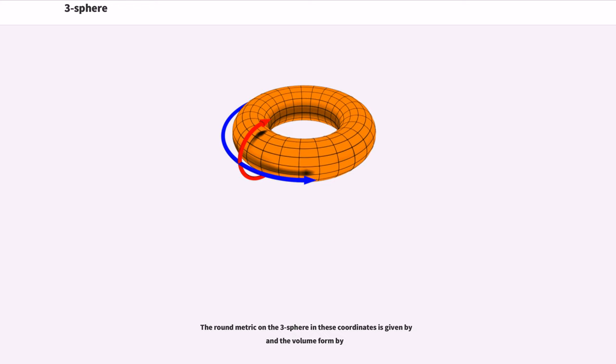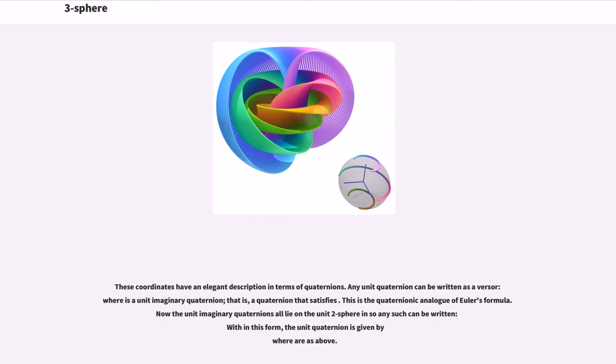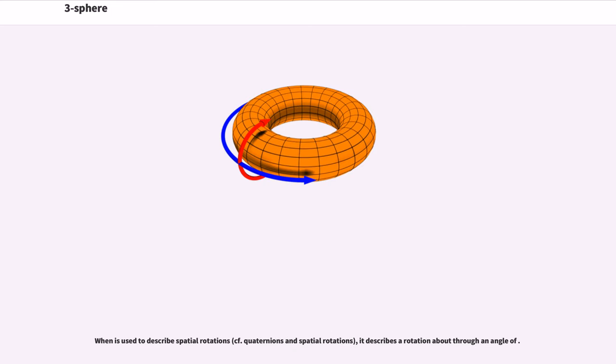The round metric on the three-sphere in these coordinates is given by and the volume form by. These coordinates have an elegant description in terms of quaternions. Any unit quaternion can be written as a versor where is a unit imaginary quaternion, that is, a quaternion that satisfies. This is the quaternionic analog of Euler's formula. Now the unit imaginary quaternions all lie on the unit two-sphere and so any such can be written in this form, the unit quaternion is given by where as above. One is used to describe spatial rotations,